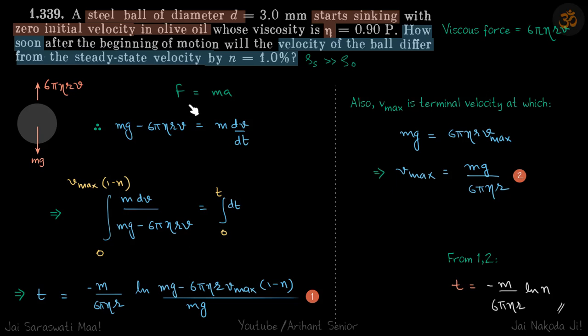We know F equals ma. For the falling ball which is going down with v, we'll say mg minus 6πηRv is equal to m dv by dt. We are taking downwards as positive. This gives a relation between velocity and time. We'll take the similar terms on one side.